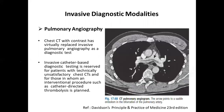The invasive diagnostic test is pulmonary angiography, where a black arrow on the image points to the hypodense area representing a saddle embolism at the bifurcation of the pulmonary artery. However, CT with contrast has now largely replaced this test since it is invasive. Pulmonary angiography is reserved for patients with technically unsatisfactory CT chest or for those in whom an interventional procedure such as catheter-directed thrombolysis is planned.